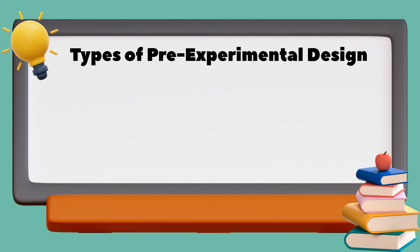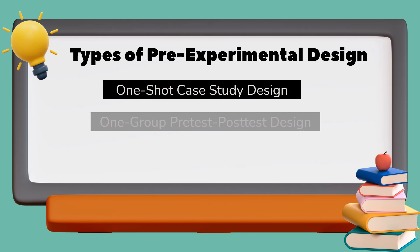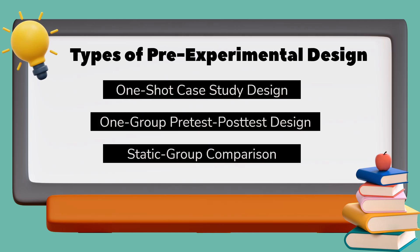Pre-experimental design has three types: one-shot case study design, one-group pre-test post-test design, and static group comparison.